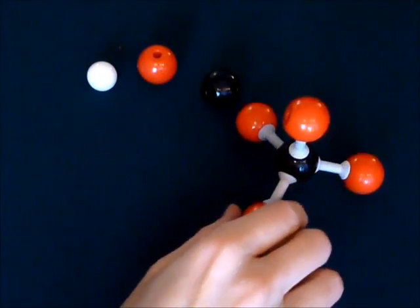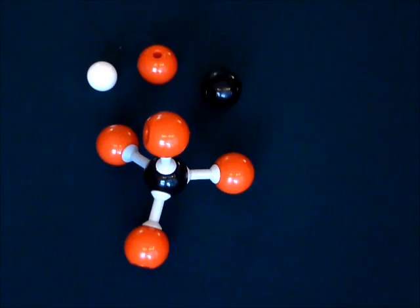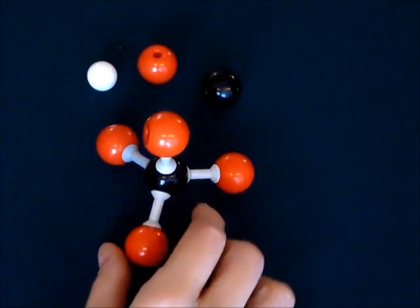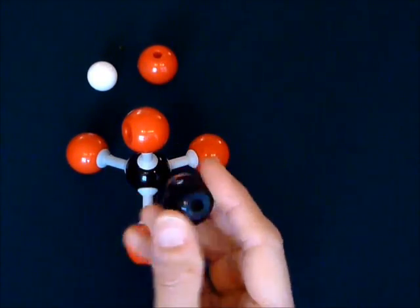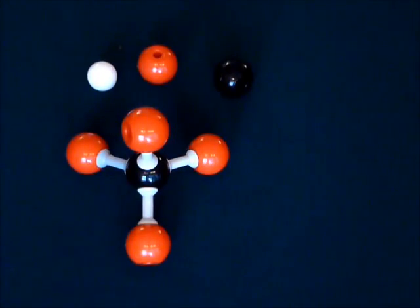But we can also let the black represent silicon because silicon has the same electron configuration that carbon does. Silicon is in the same column on the periodic table, and that means that it also has four electrons in its outer shell. It has a few more in its inner shells, but four in the outer shell. So that means it has four places, or four empty places, that it would like to form a bond. So we can also use this four-hole black circle to represent silicon.